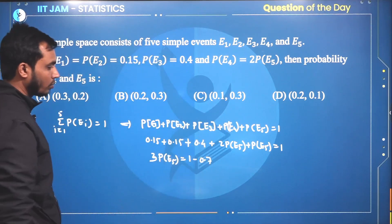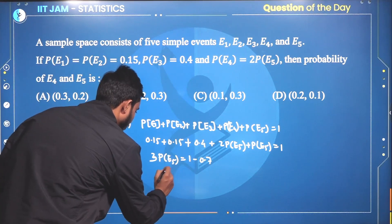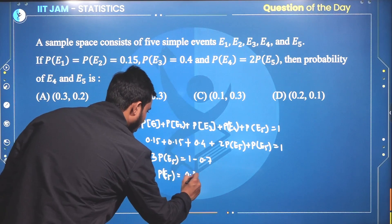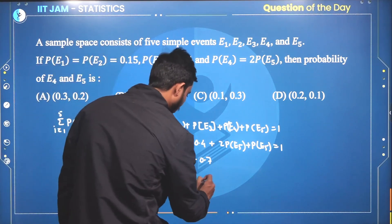We are directly shifting to the right-hand side. So, the probability of E5 becomes 0.30 divided by 3, which is nothing but 0.1.